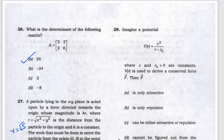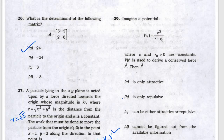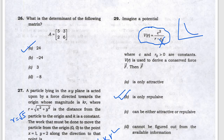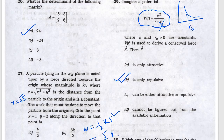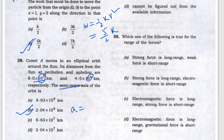Next, they are asking about the imaginary potential — this is similar to electrostatic potential. It will be repulsive in nature, so B will be the answer because the origin does not matter. If you plot the graph, it will never cross r₀ and will never be attractive.